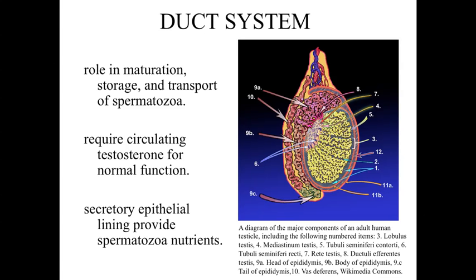If we take a look at the duct system, we're going to see an epithelial lining throughout the entire duct system, which has a primary role as a secretory epithelium in providing the spermatozoa with nutrients. These are viable, living cells passing through the duct system; they're going to be here for an extended period of time and are dependent upon nutrients provided by the epithelial lining.